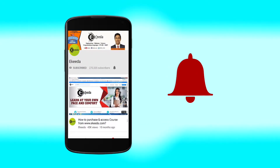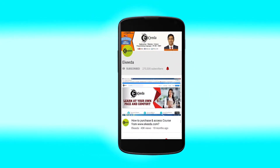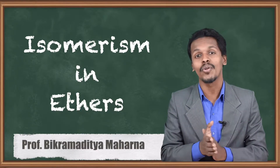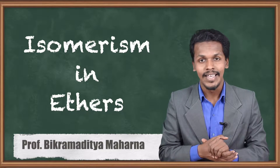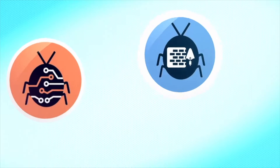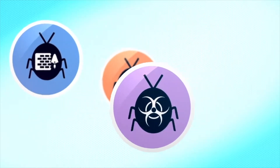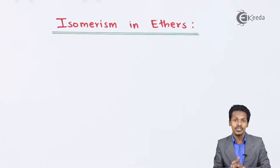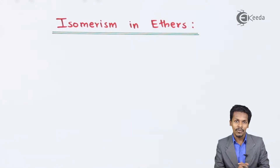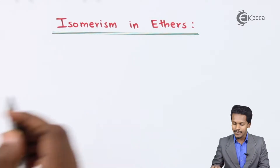Hello friends, in the previous lecture we discussed the structure of ether, and now in this topic we are going to talk about the isomers in ether. Isomers are those which have the same molecular formula but different structural formula. Depending on that, we are going to talk about the isomers of ether, which are basically divided into three types.